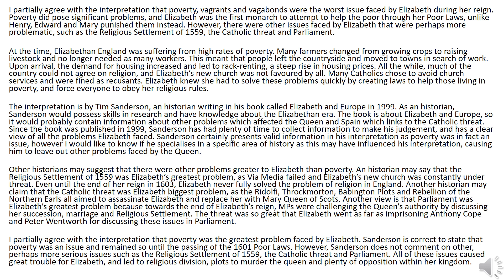Other historians may suggest that there were other problems greater to Elizabeth than poverty. A historian may say that the religious settlement of 1559 was Elizabeth's greatest problem, as via media failed and Elizabeth's new church was constantly under threat — even until the end of her reign in 1603, Elizabeth never fully solved the problem of religion in England. Another historian may claim that the Catholic threat was Elizabeth's biggest problem, as the Ridolfi, Throckmorton, and Babington plots and the Rebellion of the Northern Earls all aimed to assassinate Elizabeth and replace her with Mary Queen of Scots. Another view is that Parliament was Elizabeth's greatest problem because, towards the end of her reign, MPs were challenging the Queen's authority by discussing her succession, marriage and religious settlement — the threat was so great that Elizabeth went as far as imprisoning Antony Cope and Peter Wentworth for discussing these issues in Parliament.